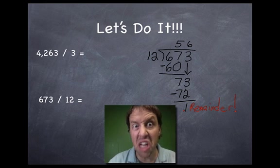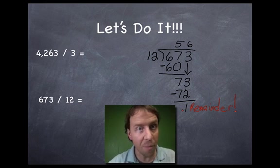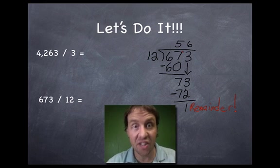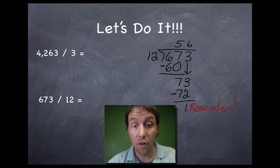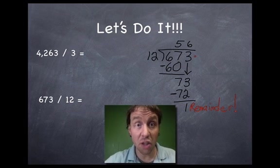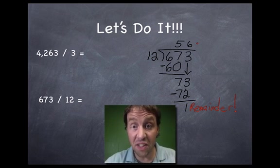Now like if this remainder were 13, that'd be too big. We screwed something up. That would mean that one of the numbers up here is wrong. So you have to go back and fix it and get closer to the number that you're trying to subtract from. So that's our remainder. So the answer to this problem would be 56 remainder 1.